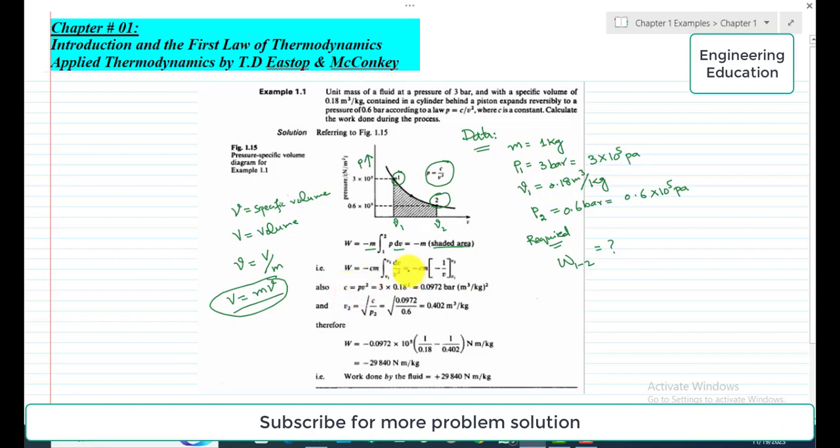Here we don't know the value of C, so to find the value of C: C is equal to PV square according to the law given. We know the initial conditions P1, V1, so that's why we are using P1 V1 square. P1 is 3 bar and V is 0.18 cubic meter per kilogram. So when we multiply these values we get 0.0972 bar into cubic meter per kilogram whole square.